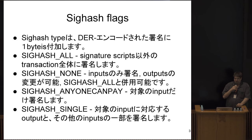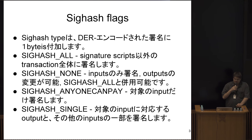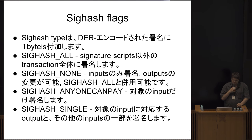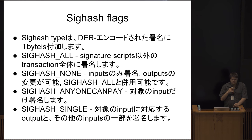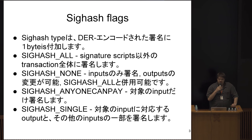There is actually a single byte appended to a signature that specifies in what way the transaction was signed. There are a few different Sighash flags that have been implemented and deployed since the beginning. The most common one is SighashAll, which means sign everything except for the scripts. SighashAnyoneCanPay is another example, where you only sign the current input and everything else in the transaction is not considered part of the signature — it's not covered under that commitment.